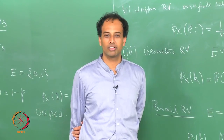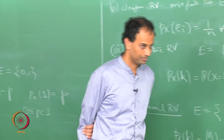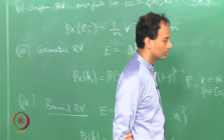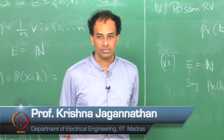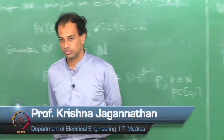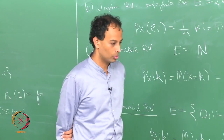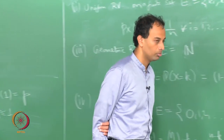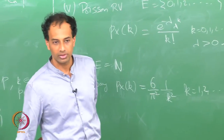These are the simplest kind of random variables — discrete random variables. Next week we will move to continuous random variables.